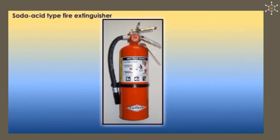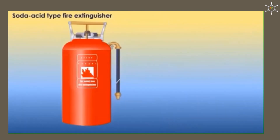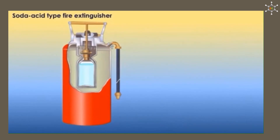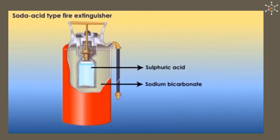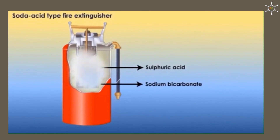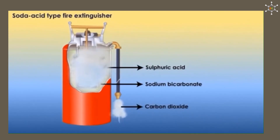Another use is in the soda-acid fire extinguisher. The cylindrical portion contains sodium bicarbonate, and concentrated sulfuric acid is sealed in a glass bottle fixed to the knob. In case of fire, striking the knob breaks the glass bottle; the sulfuric acid reacts with sodium bicarbonate to generate carbon dioxide, which is directed onto the fire. Since carbon dioxide does not support burning, the fire is extinguished.